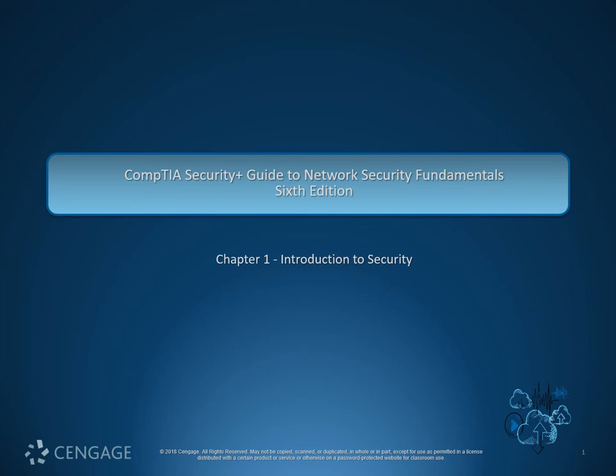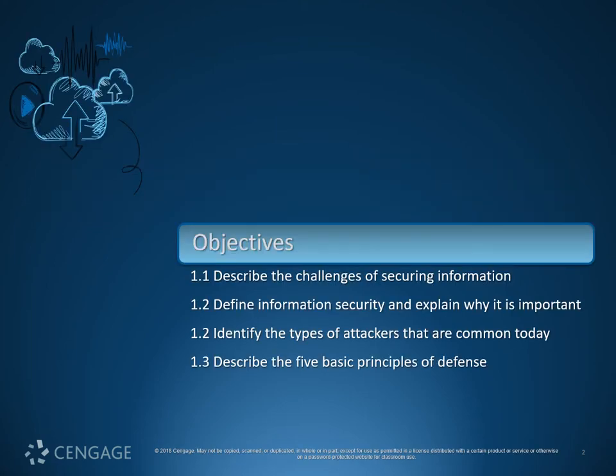Good morning, Mr. RMQ back with you today for your SEC 110 lecture series. We are working from the CompTIA Security Plus Guide to Network Security Fundamentals, 6th edition. Chapter 1 is all about the introduction to security. We have four primary objectives: describing the challenges of securing information, defining information security and why it's important, different types of attackers common today, and the five basic principles of defense.